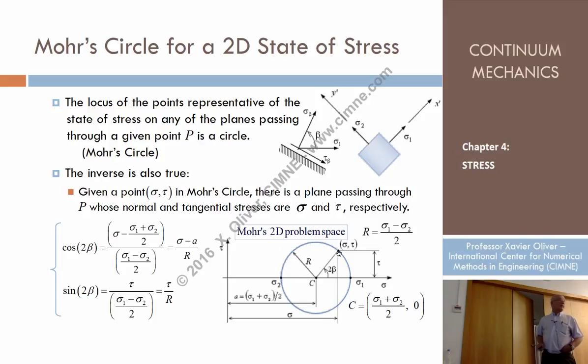What this point fulfills exactly that. What is the sine of this angle? The sine of this angle is tau divided by this distance, which is tau divided by r, which is that. And the cosine of this angle, which is sigma minus the distance, which is a, divided by r, is that cosine of this angle.